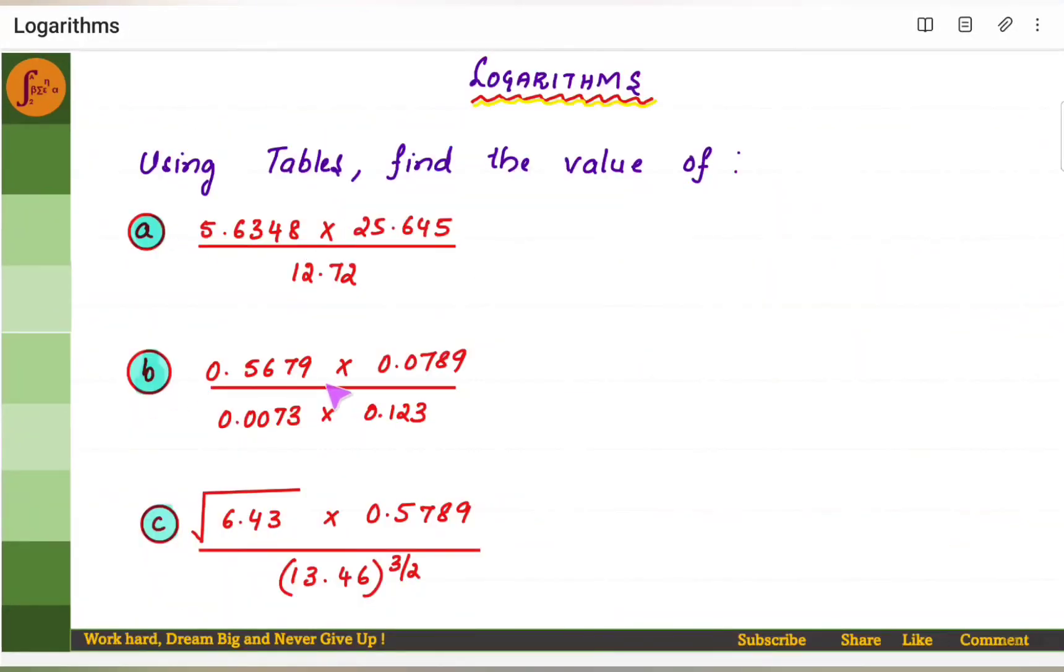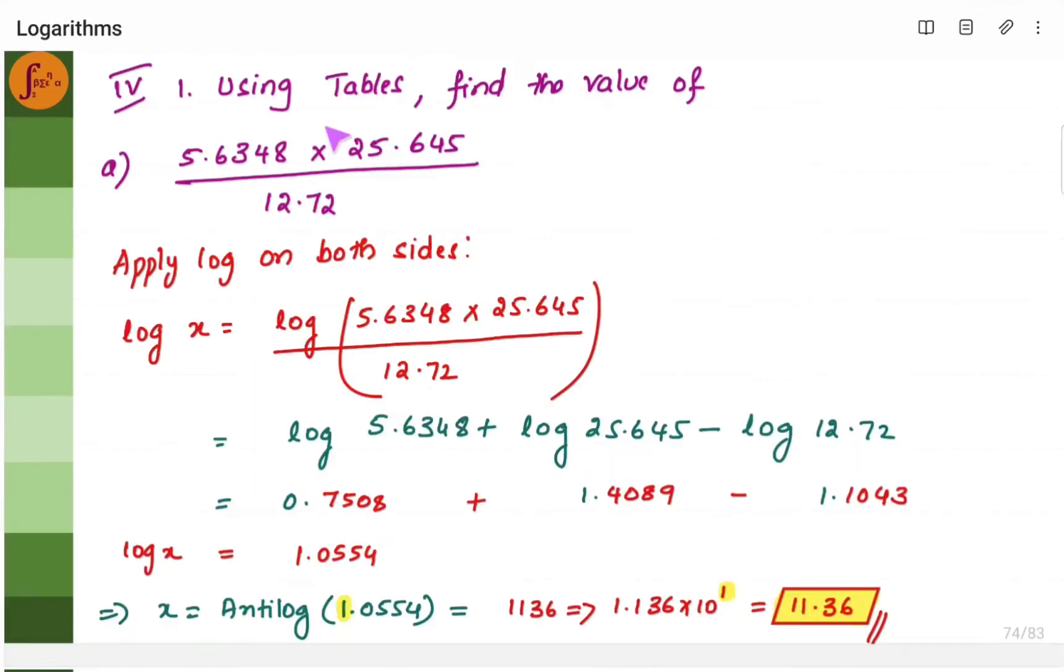Let's solve these three problems using logarithmic tables. Here's a problem where we have both multiplication and division together. What we'll do? We'll use the same log property. First take log on both sides, you get log x is equal to this much. Assume that this is equal to x.